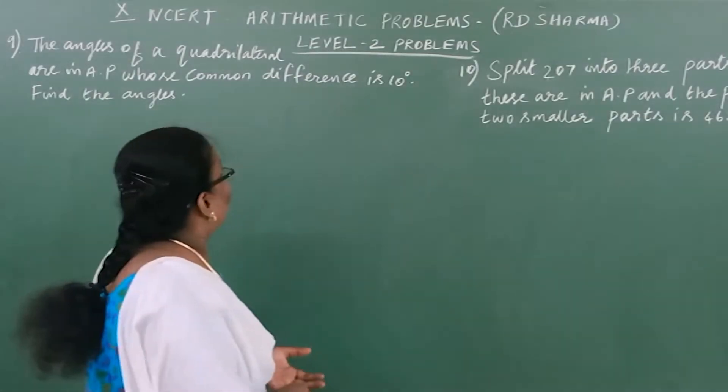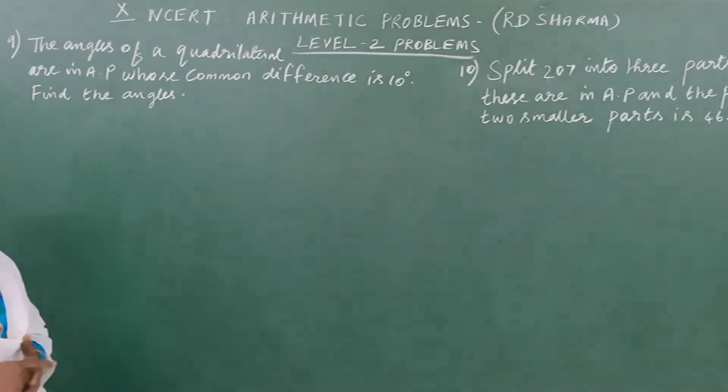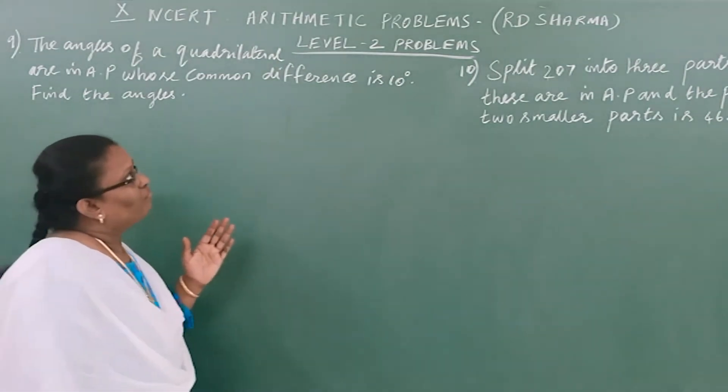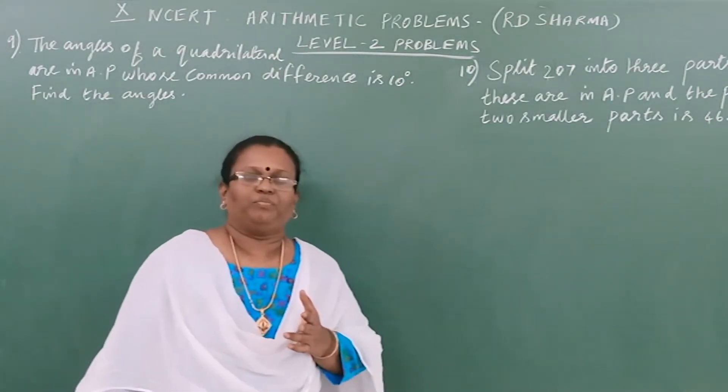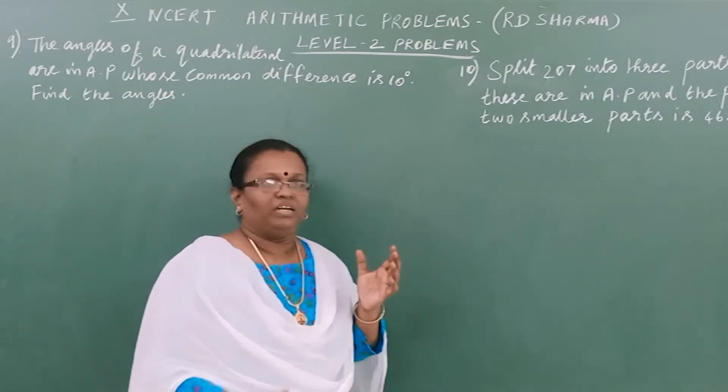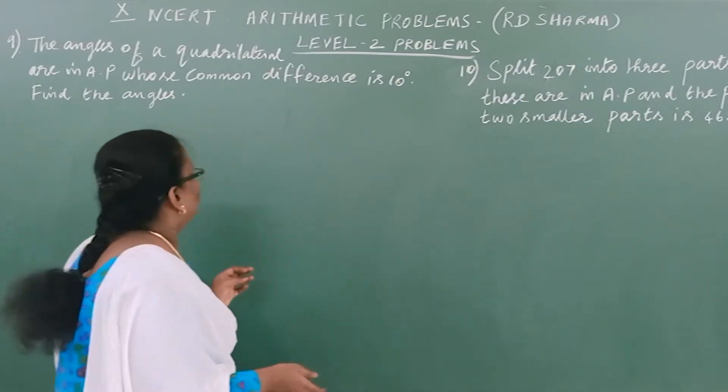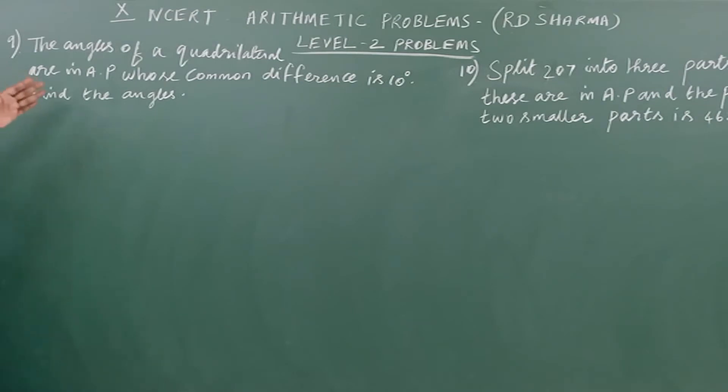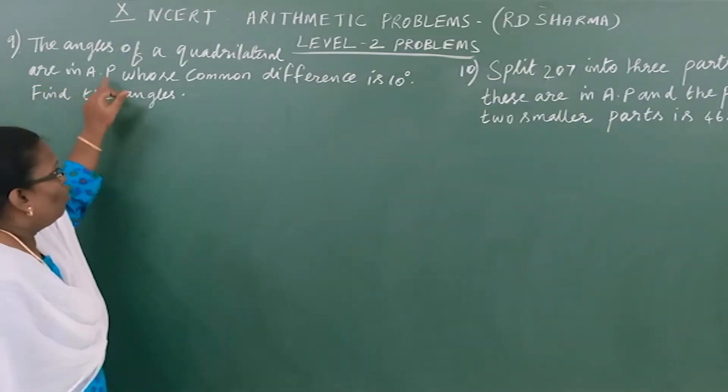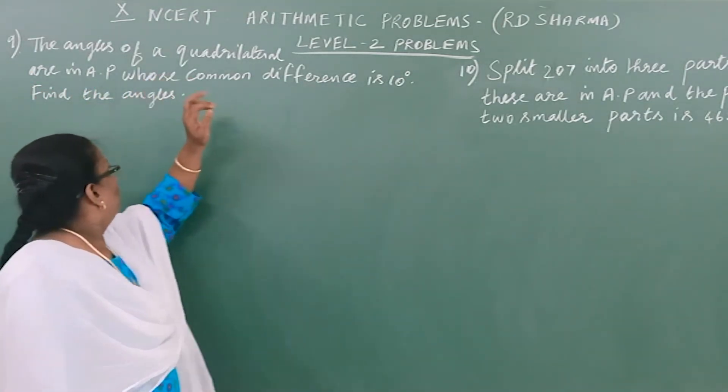Now we are seeing arithmetic problems from RD Sharma, Level 2 problems. First problem: the angles of a quadrilateral are in AP whose common difference is 10. Find the angles.